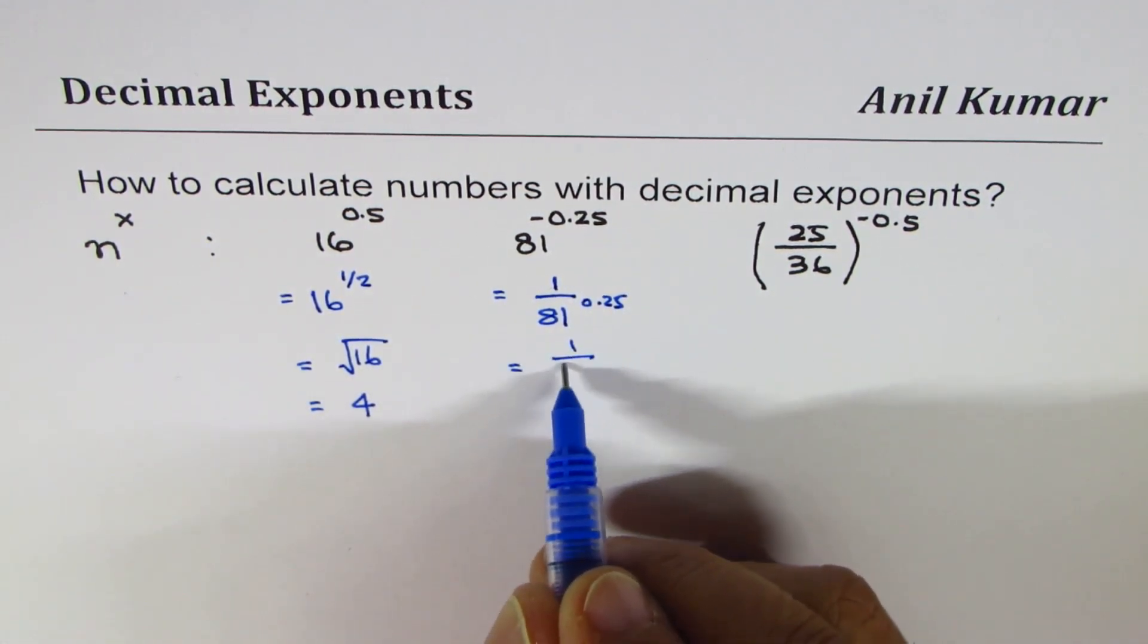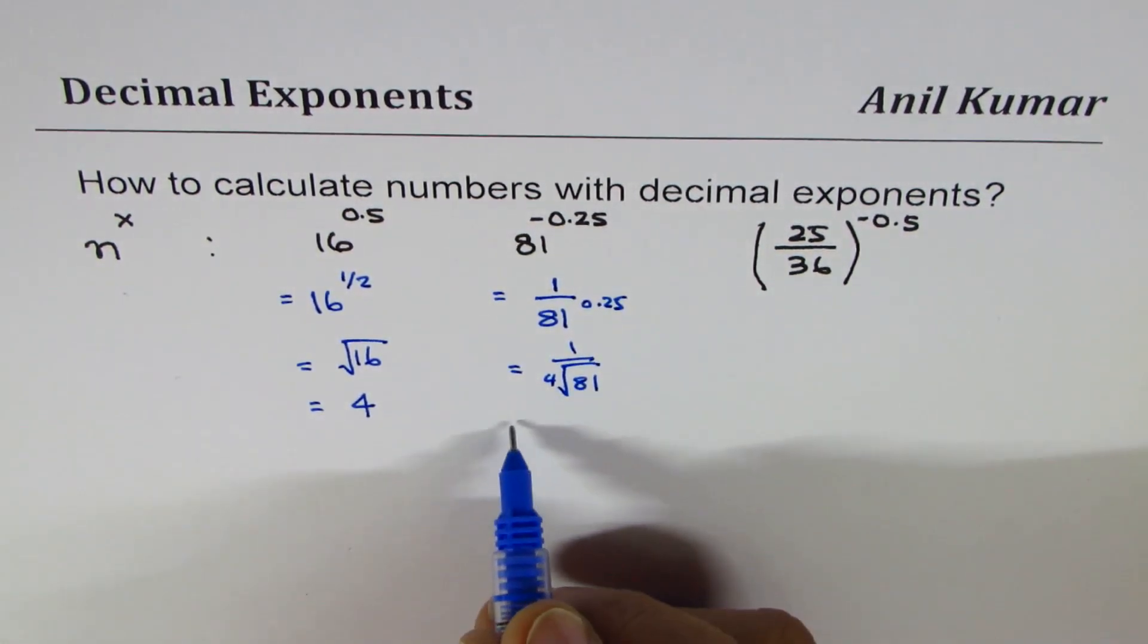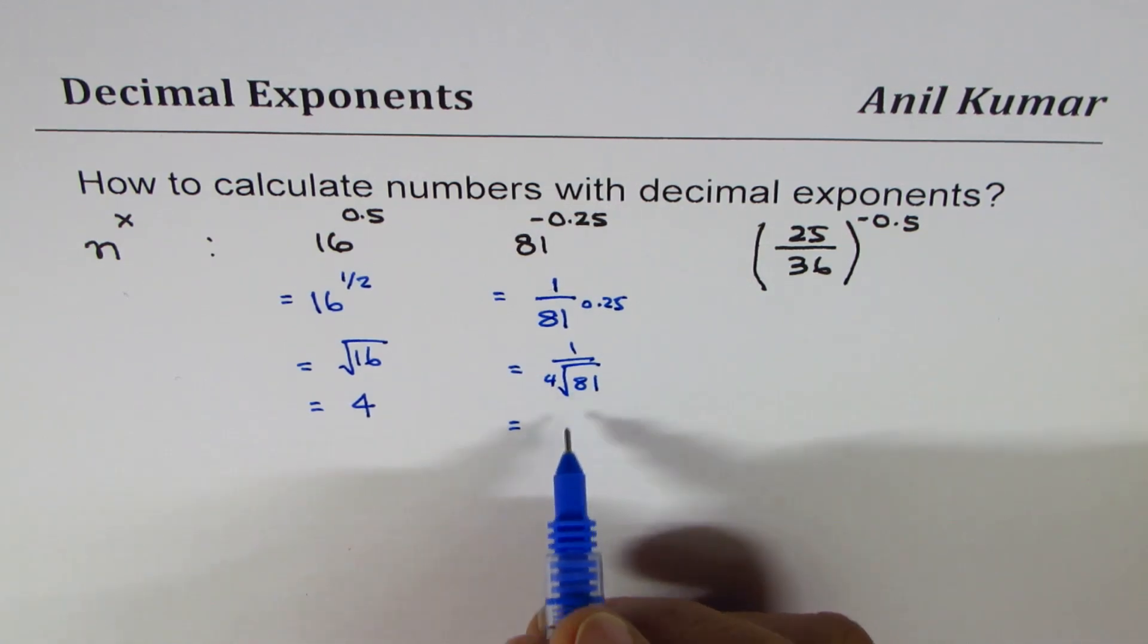Fourth root of 81: the square root is 9, and square root of 9 is 3, so it equals 1 over 3. So that becomes the fourth root of 81.